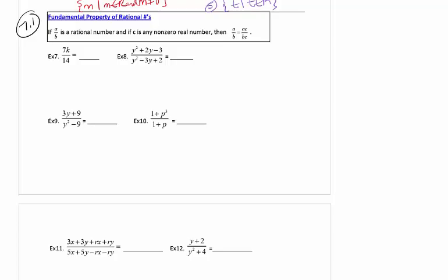We're now going to talk about section 7.1 with rational functions and rational expressions, specifically simplifying rational expressions. The first property is not a new one — you've used it with fractions before. Rational expressions are fractions that can include numbers, variables, and algebraic operations: adding, subtracting, multiplying, and dividing. The key is that we can always cancel if there are like factors.